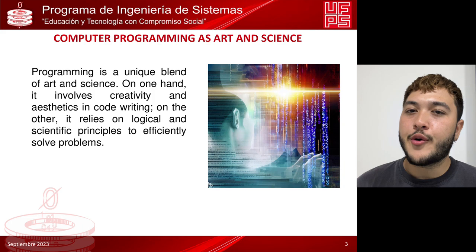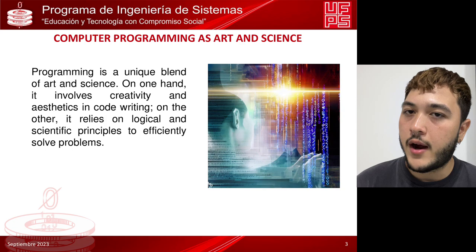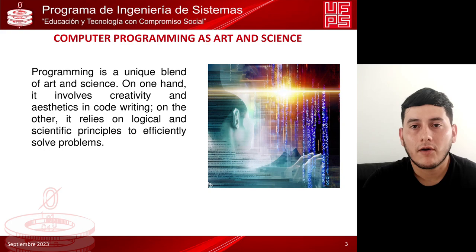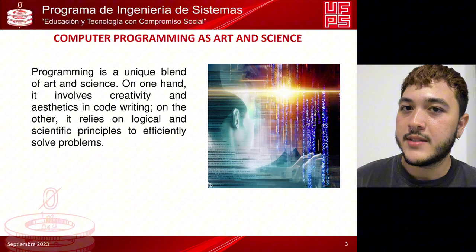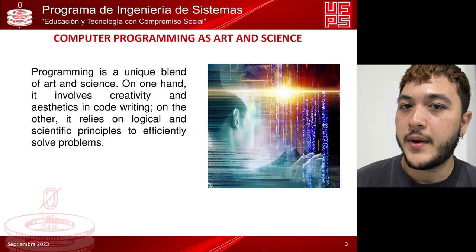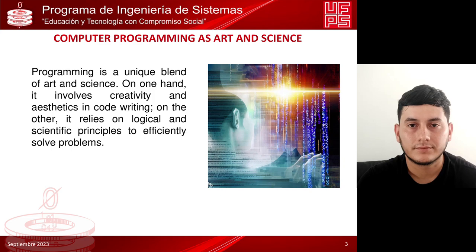Now let's talk about how computer programming is considered both an art and a science. Dijkstra and others have highlighted that programming can be both a science and a form of art. Often when we write programs, we do so with a goal of efficiency and precision, which is not only a science. The concept of programming style is gaining importance. Kernighan and Plauger, for example, talk about elements of programming style, meaning we seek programs that not only work correctly but also have a clean and elegant style.